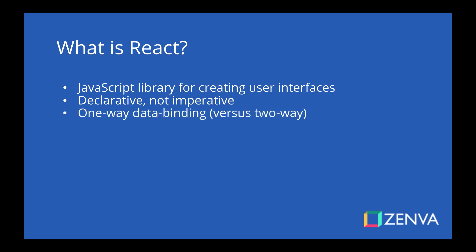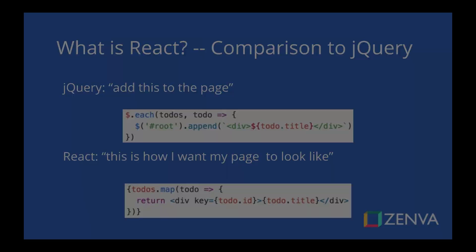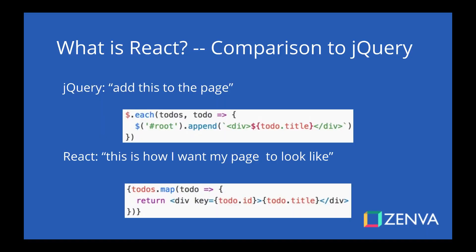If you're coming from an Angular background or Knockout.js background, React is one-way data binding versus two-way — that's an important distinction to make. So compared to jQuery, jQuery is imperative. You can iterate through a list of to-dos.